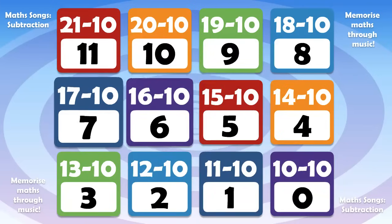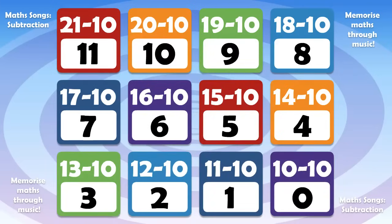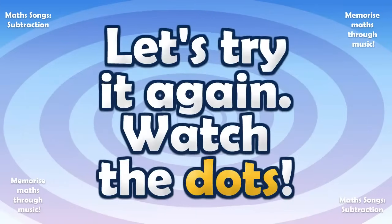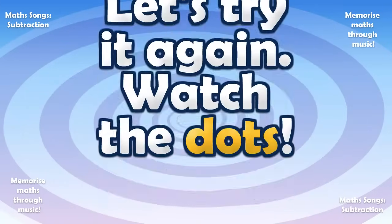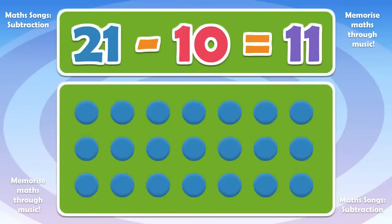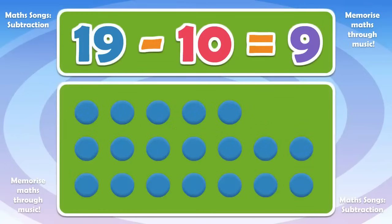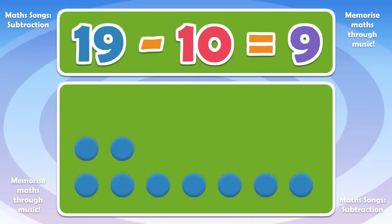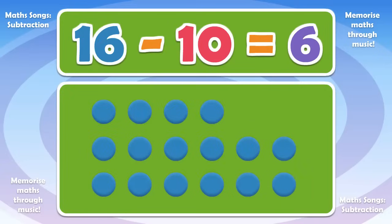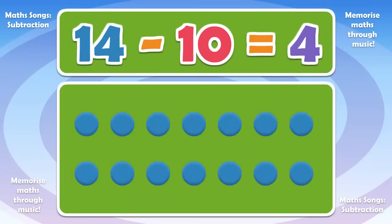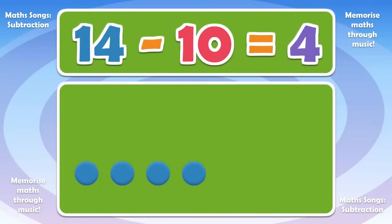Let's try it again! Watch the dots! 21 minus 10 is 11. 90 minus 10 is 9. 16 minus 10 is 6. 40 minus 10 is 4.